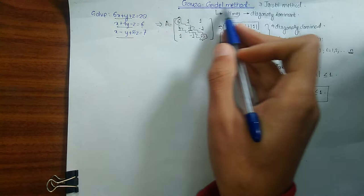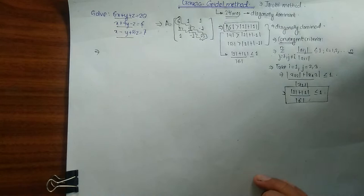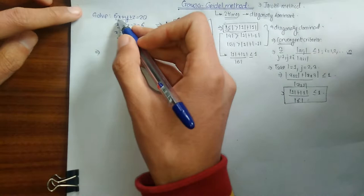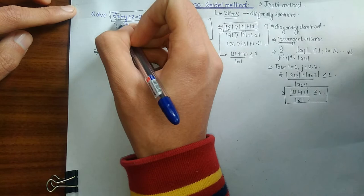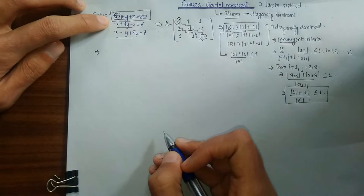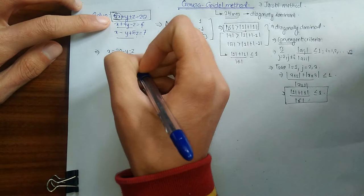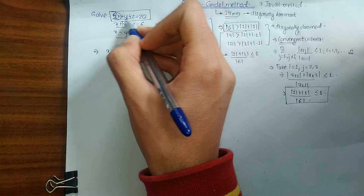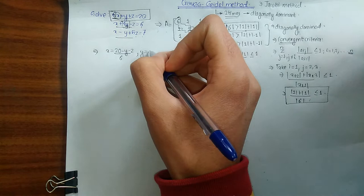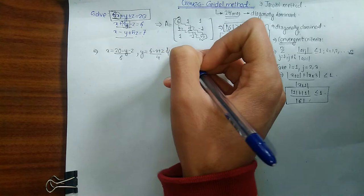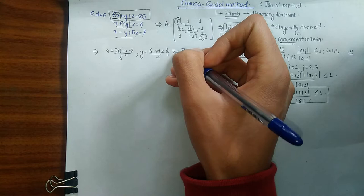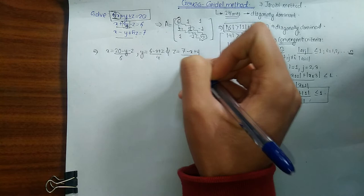After confirming that the equation is diagonally dominant, we rewrite each equation in terms of x, y, and z. In the first equation, x is the variable containing the diagonal element, so we write: x = (20 − y − z) / 6. In the second equation, y contains the diagonal element: y = (6 − x + z) / 4. For the third equation: z = (7 − x + y) / 5.